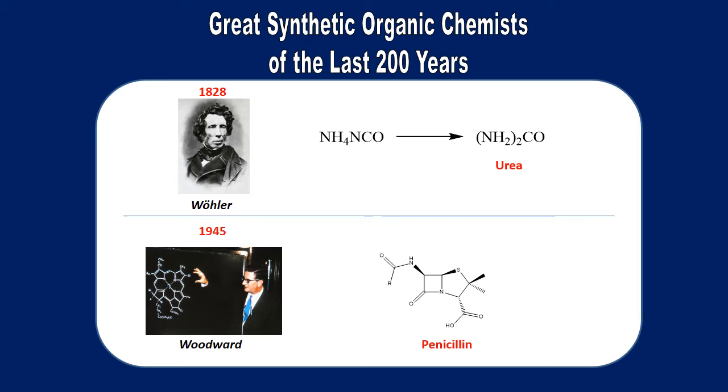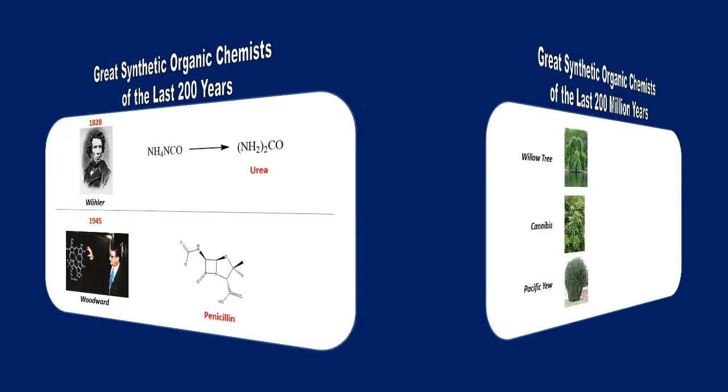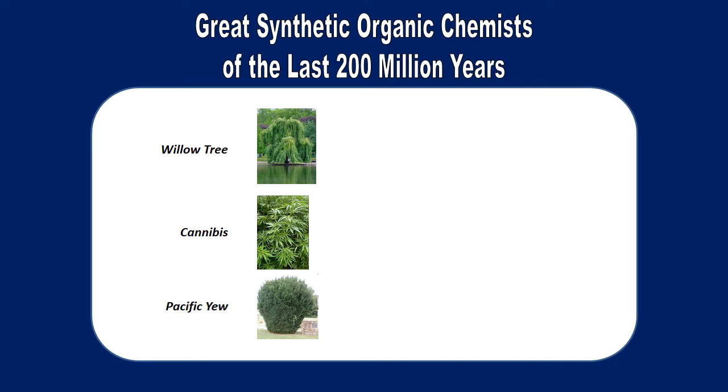A century later in 1945, Robert Burns Woodward and his contemporaries were able to create penicillin and many other antibiotics derived from it in the organic chemistry laboratory. And as great and influential as these experiments and inventions became, there are other chemists who've been at work for much much longer.